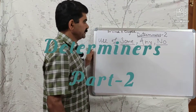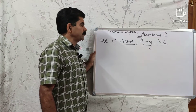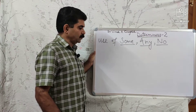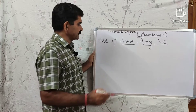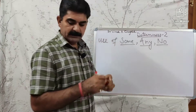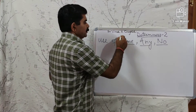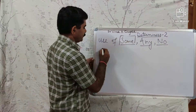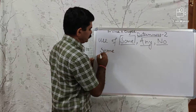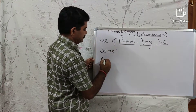Let us continue with determiners. First of all, we will do the use of SOME, ANY, and NO as a determiner. First, learn two points about SOME and ANY.